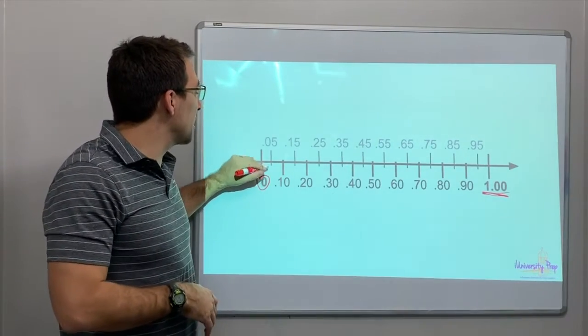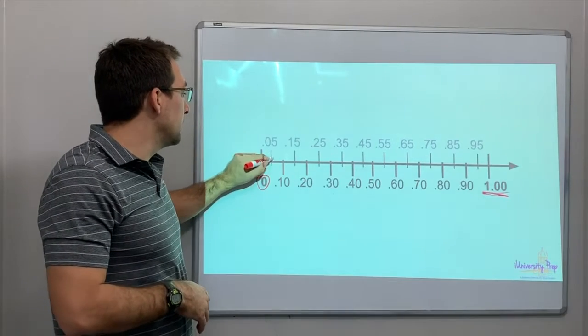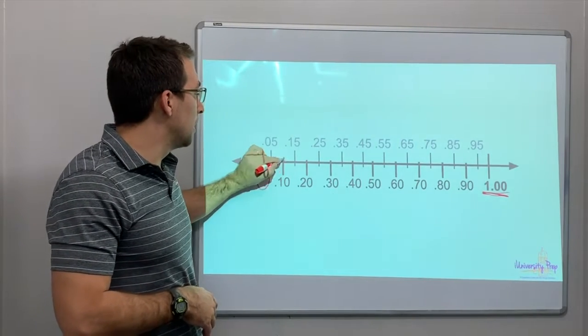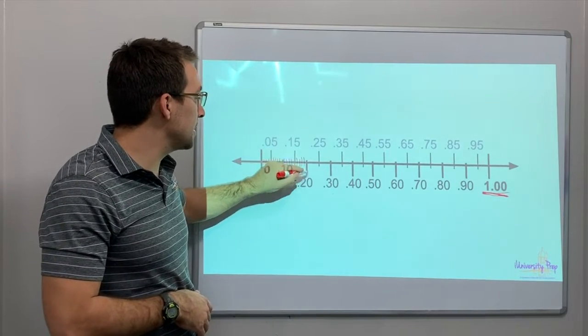Couldn't we just continue to add pennies? We could say, one, two, three, four, five pennies. Six, seven, eight, nine, a dime. Eleven, twelve, thirteen, fourteen, fifteen. Sixteen, seventeen, eighteen, nineteen, twenty.